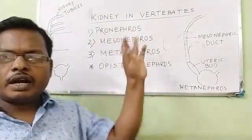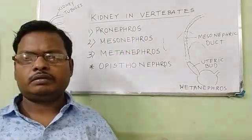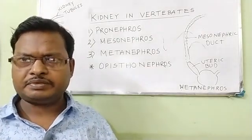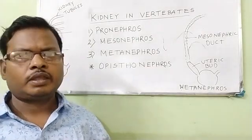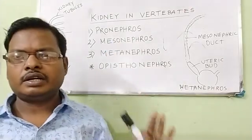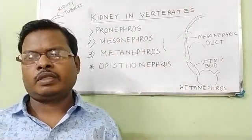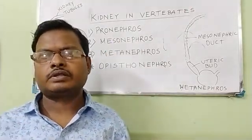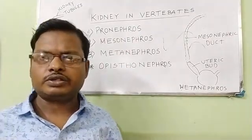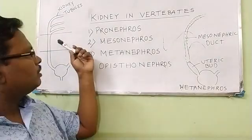The Pronephros is not the adult kidney. No animal retains it as an adult kidney — the only exception is Myxine (Hagfish). However, every organism develops a Pronephros in early embryonic stages.